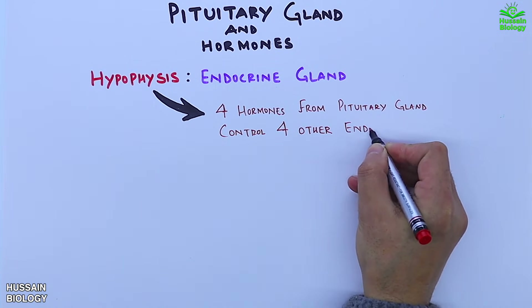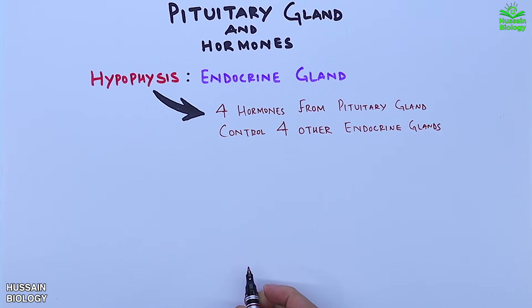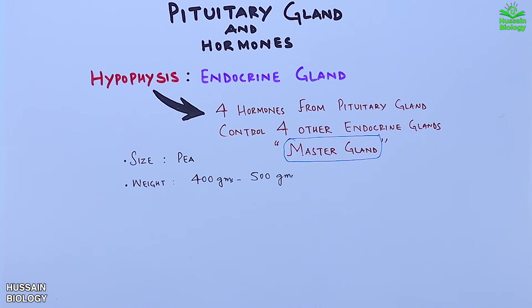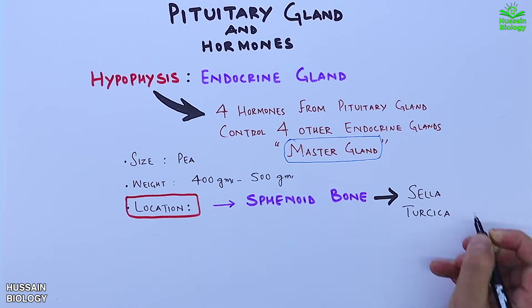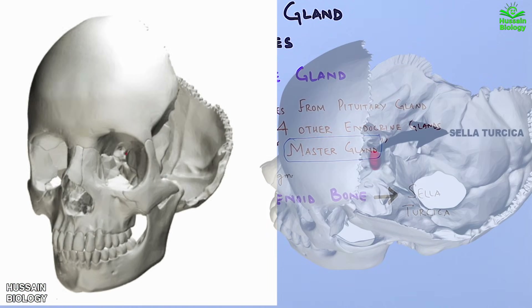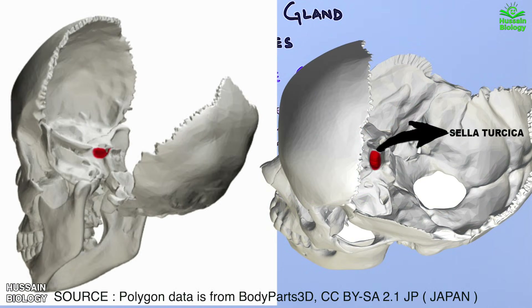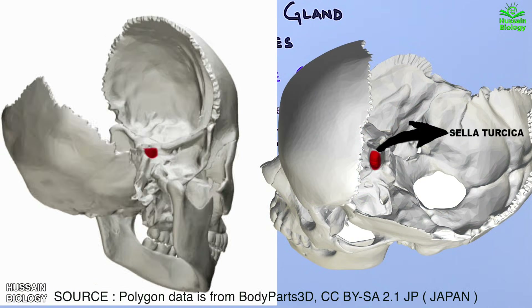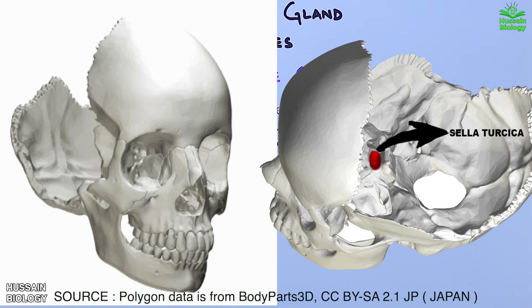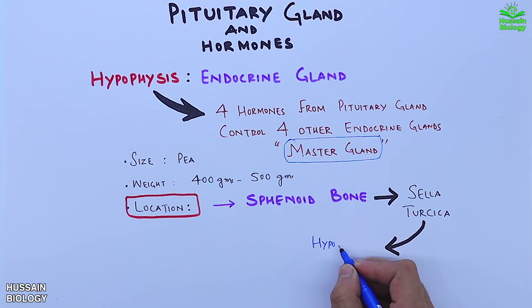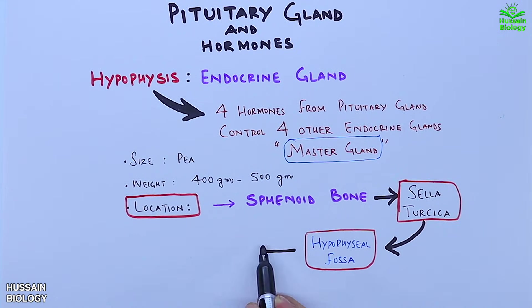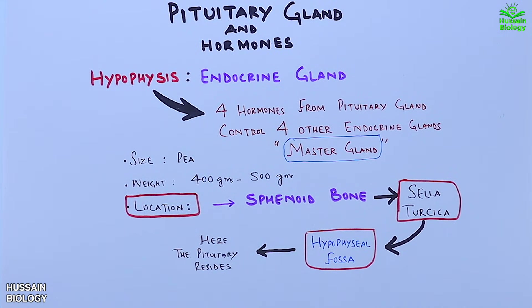Four hormones from the pituitary gland control other four endocrine glands, and for that reason it's also called the master gland. It's about the size of a pea. The location of the pituitary gland is in the sphenoid bone, where we have the saddle-like depression called the sella turcica, as shown in the animation and diagram. The red color marking shows the sella turcica in both diagrams.